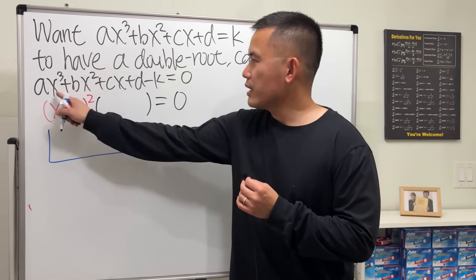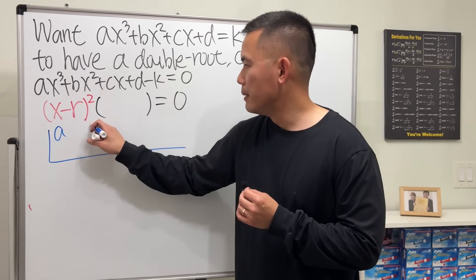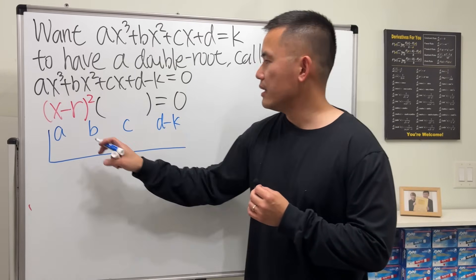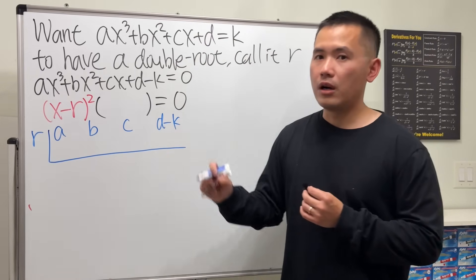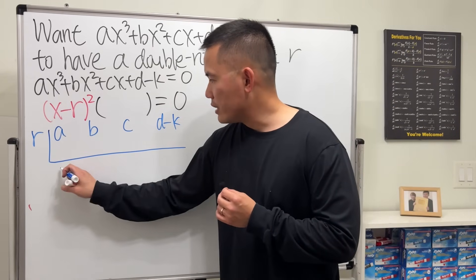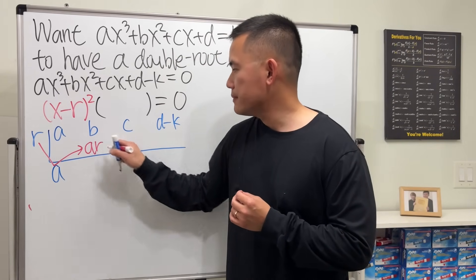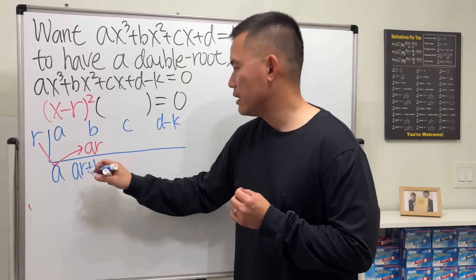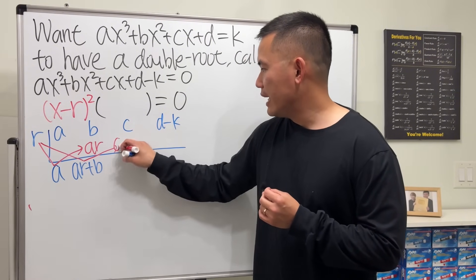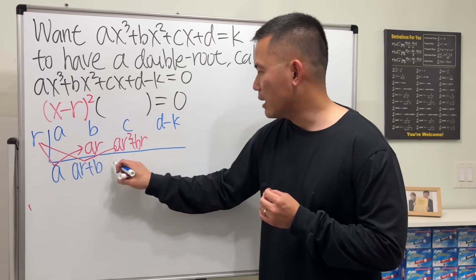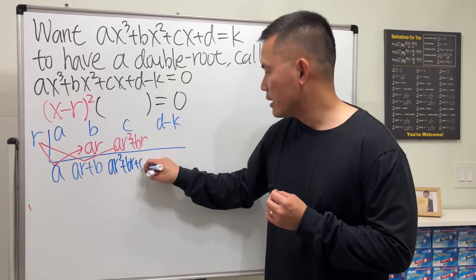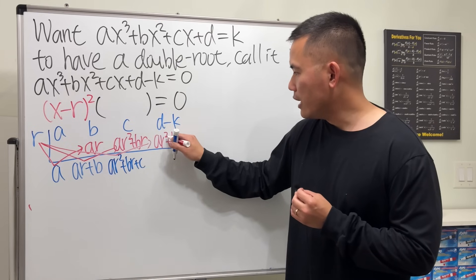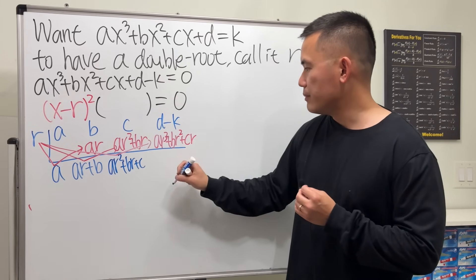Let's write down the coefficients for synthetic division. We have ax cubed, bx squared, cx, and d minus k — dividing by x minus r, so r goes on the outside. Bring down the a, multiply to get ar, and add to get ar plus b. Continue: multiply to get ar squared plus br, then add them up.